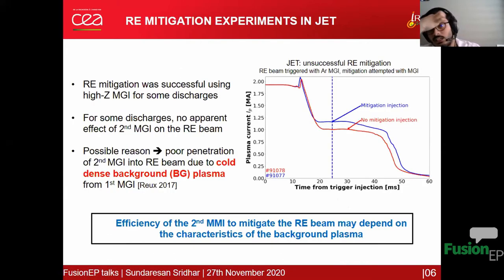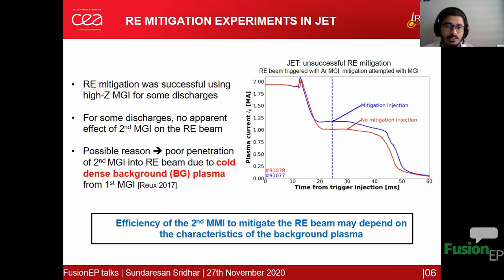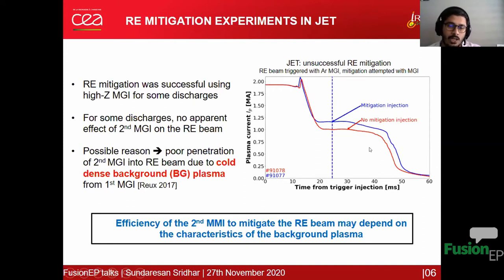In JET, however, there is a problem. When trying to use this scheme, runaway mitigation was successful for some discharges using high-Z massive gas injection, but for other discharges there is no apparent effect of the second massive gas injection on the runaway beam. As you can see in the figure, the trace in red shows no mitigation injection and the one in blue shows a mitigation injection — yet there is no effect on the total duration or other characteristics of the runaway beam.